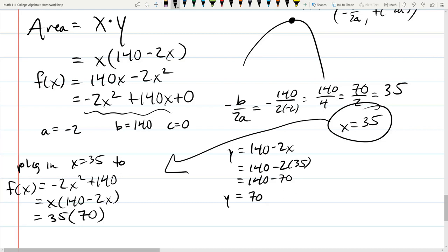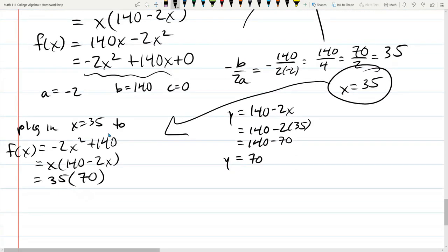All right. So this is 35 times 70. I could have plugged in 35 right there. Would have been totally reasonable to do that. But I didn't. So 35 times 70, I have no idea.